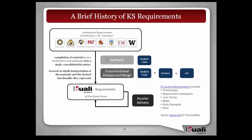We had eight institutions contributing information across 30 melanges, and the analysis team first did a synthesis of that material — essentially a matching and sorting exercise, where we said let's see what the commonality is across institutions. But there was not any true, real hardcore analysis done at that point. That really happened when we moved into what we call our cross-functional analysis and design, which wasn't just analysis, because those were BAs and SMEs. Once we included UX and services, we were really able to get to an in-depth interpretation of the materials. You'll often hear this referred to as the A&D work.